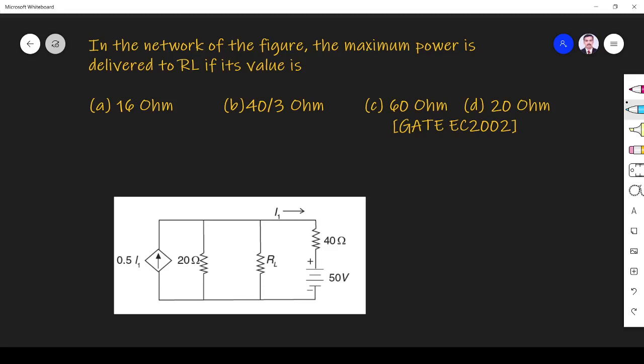Hi friends, in this video we will solve a network theory related question asked in GATE EC 2002 paper. The question is: in the network of the figure, the maximum power is delivered to RL if its value is 16 ohm, 40 by 3 ohm, 60 ohm, or 20 ohm.